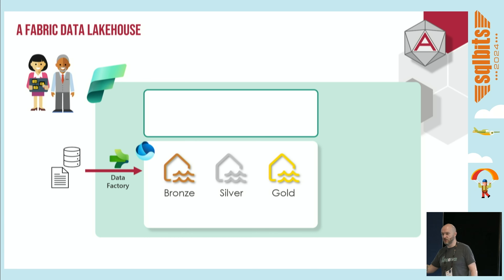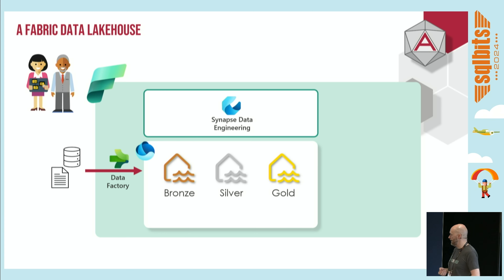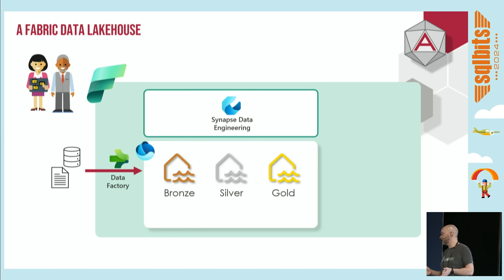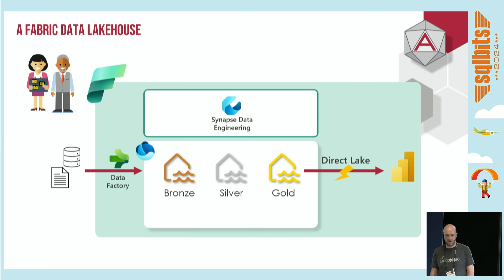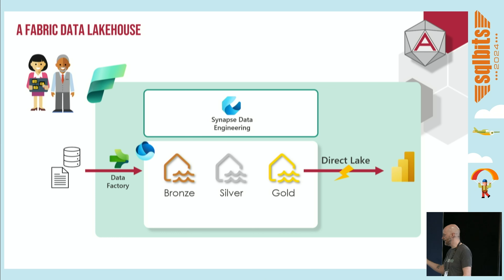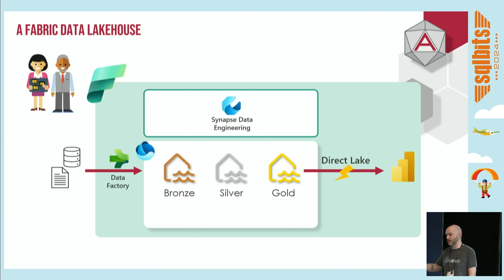Our ingestion would happen using Data Factory - we've got the ability to connect to many different sources and pull data in. Then generally you would use Synapse Data Engineering on top, which is our notebooks, allowing us to run everything on the Spark cluster under the hood. And then finally we surface that data using Power BI and one of the key features of Fabric which is DirectLake. Microsoft doesn't necessarily prescribe this medallion architecture approach - they leave it pretty much up to you. If you want four layers, great. If you only want three or two, that's entirely up to yourself.